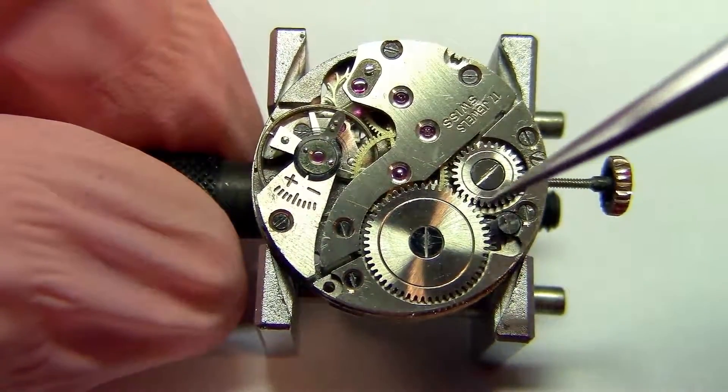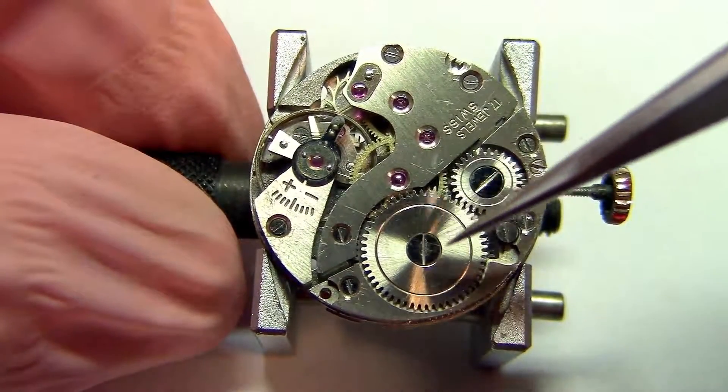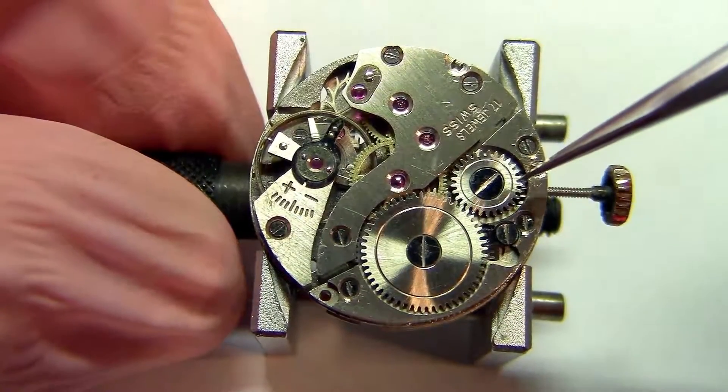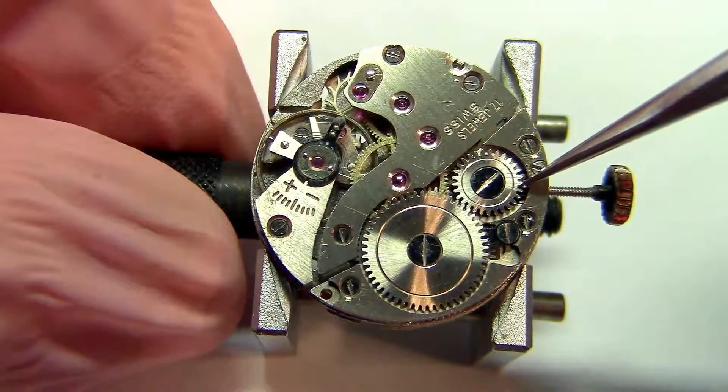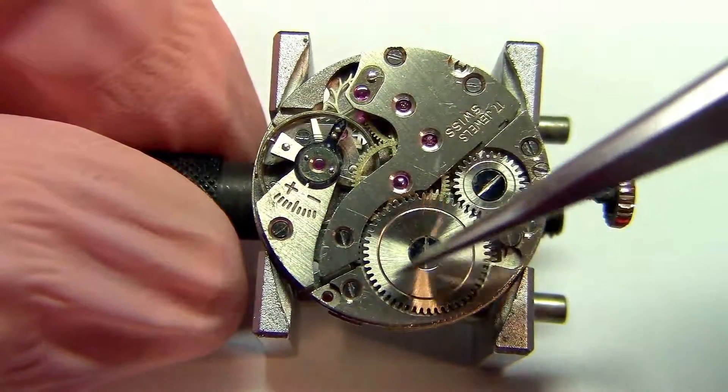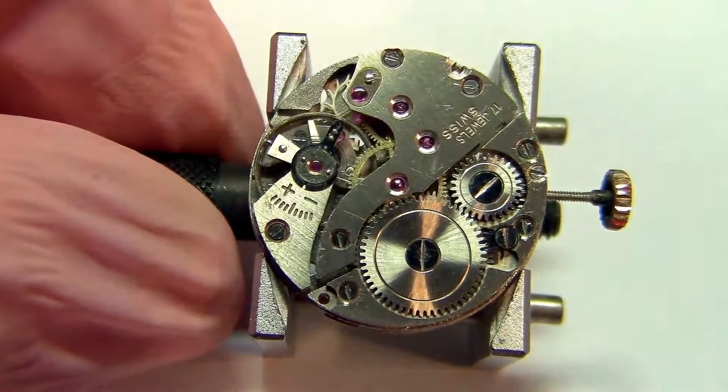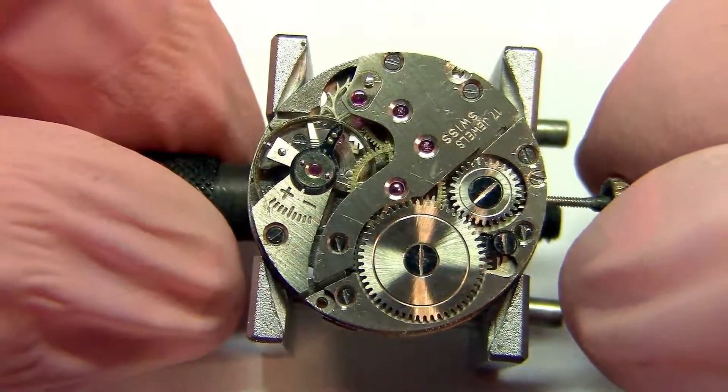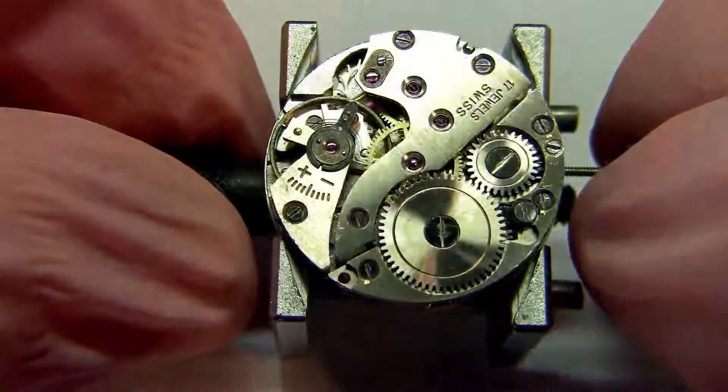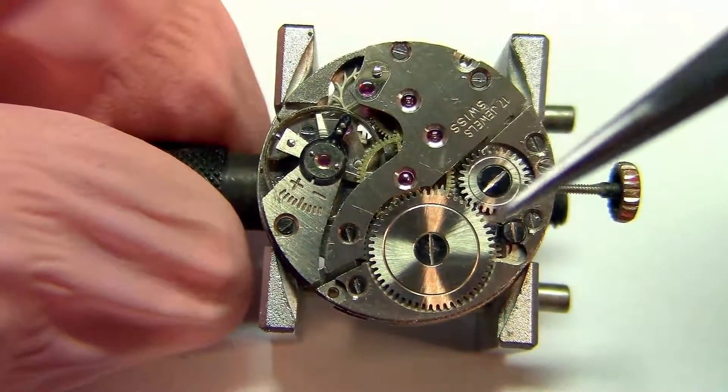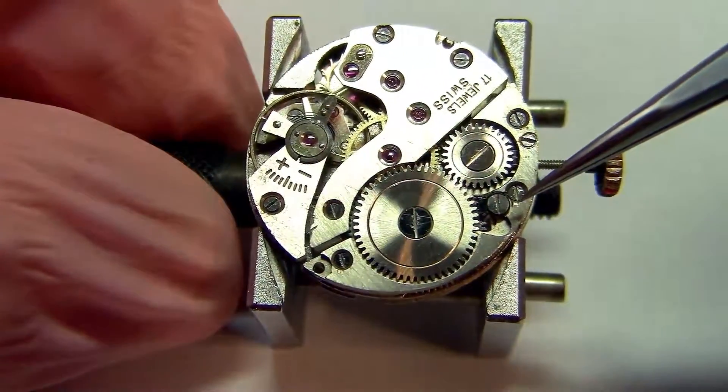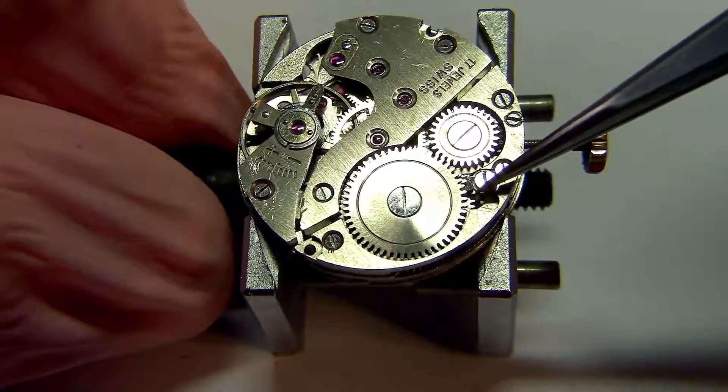But when we start winding it up, what we are actually doing is making the mainspring wind over itself, over its center. It has an axle here in the center, which we call the arbor, the mainspring arbor. And the mainspring is contained inside what we call the barrel. So the barrel is actually right below this big wheel here.